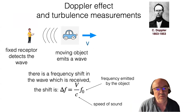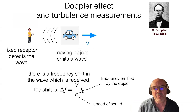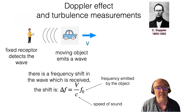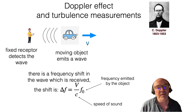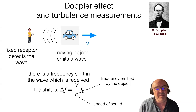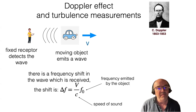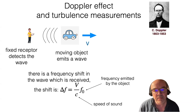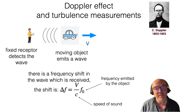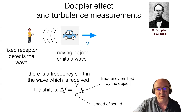Another concept to introduce is the Doppler effect, named after Christian Doppler, a German physicist. This effect is used to estimate the velocity of a moving object. If a moving object is emitting a wave and you are a fixed receptor detecting that wave, there is a frequency shift. By estimating this frequency shift you can determine the velocity of the system using the relation shown here.